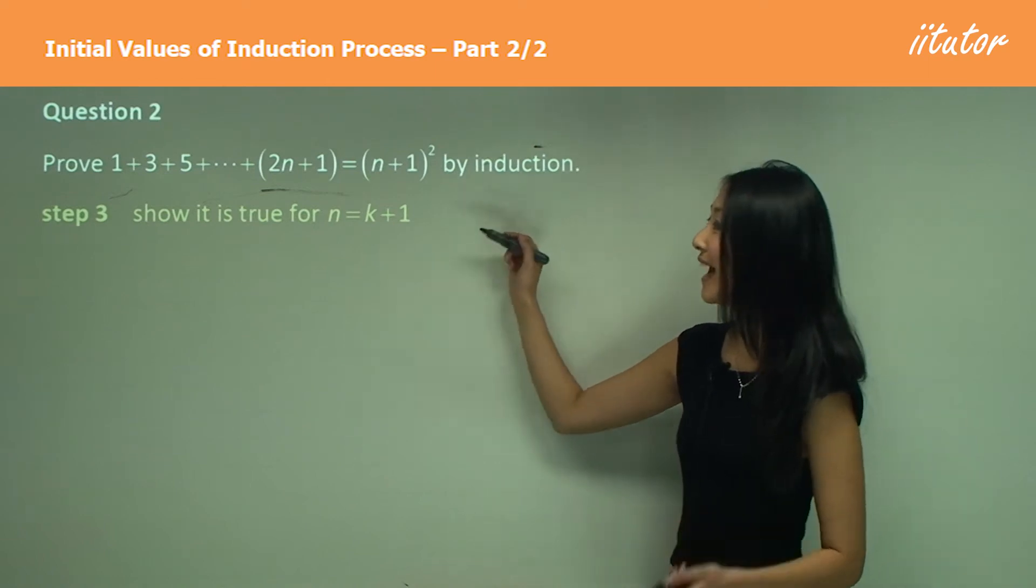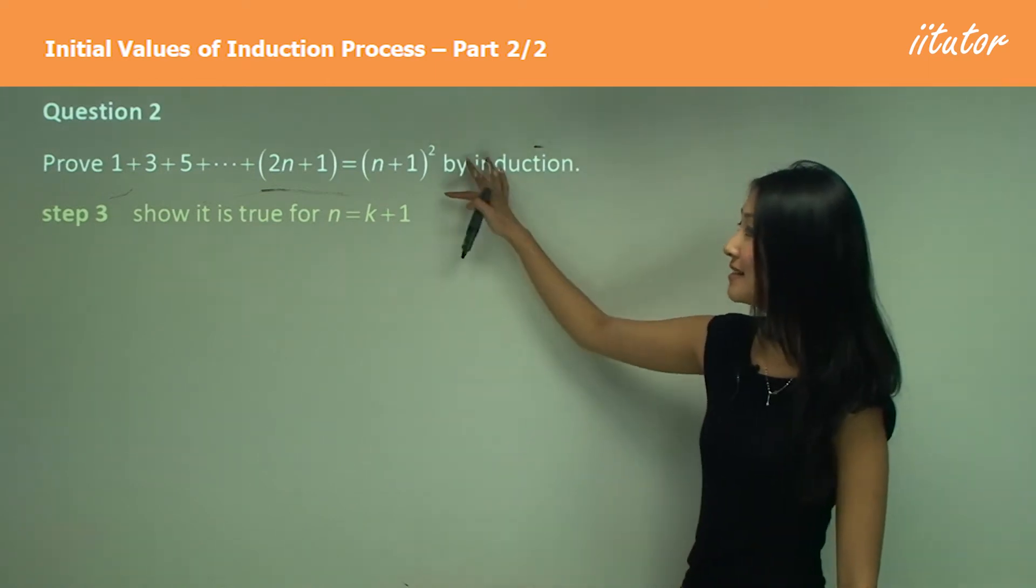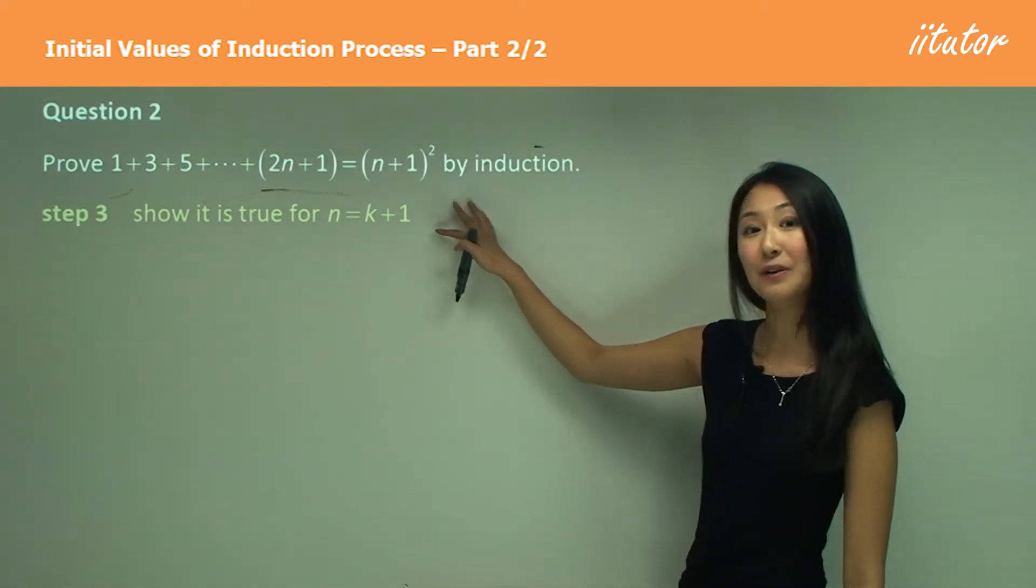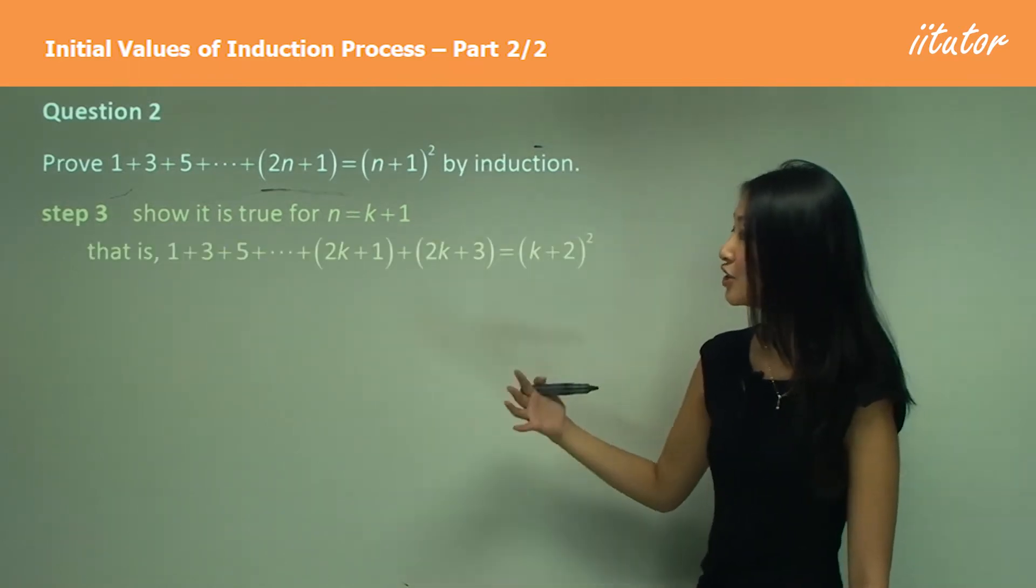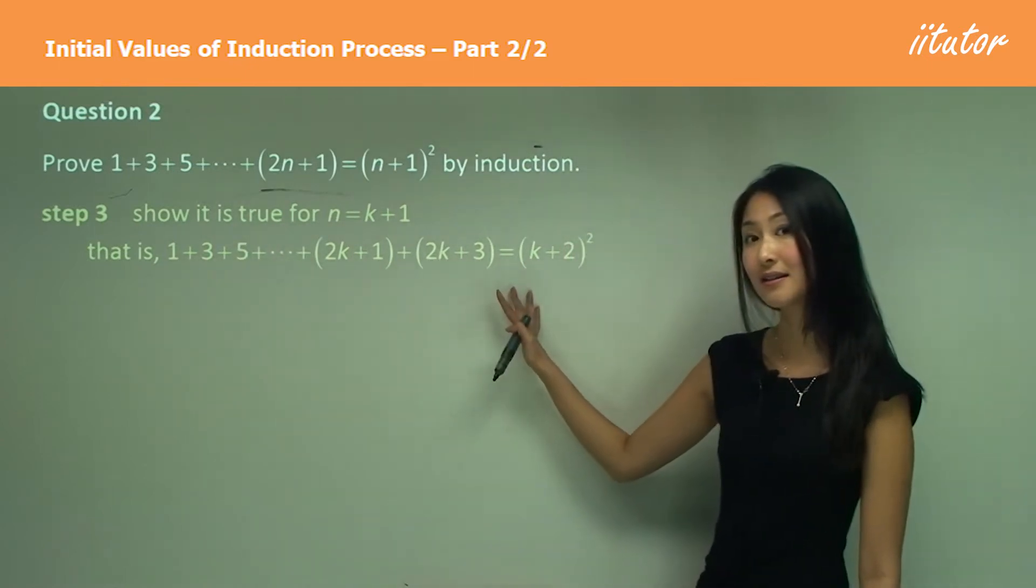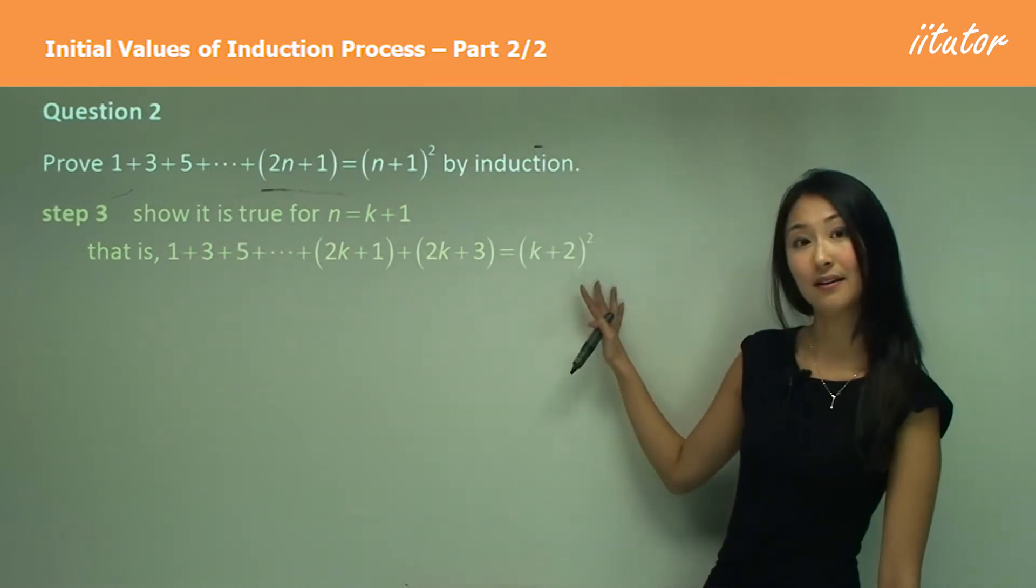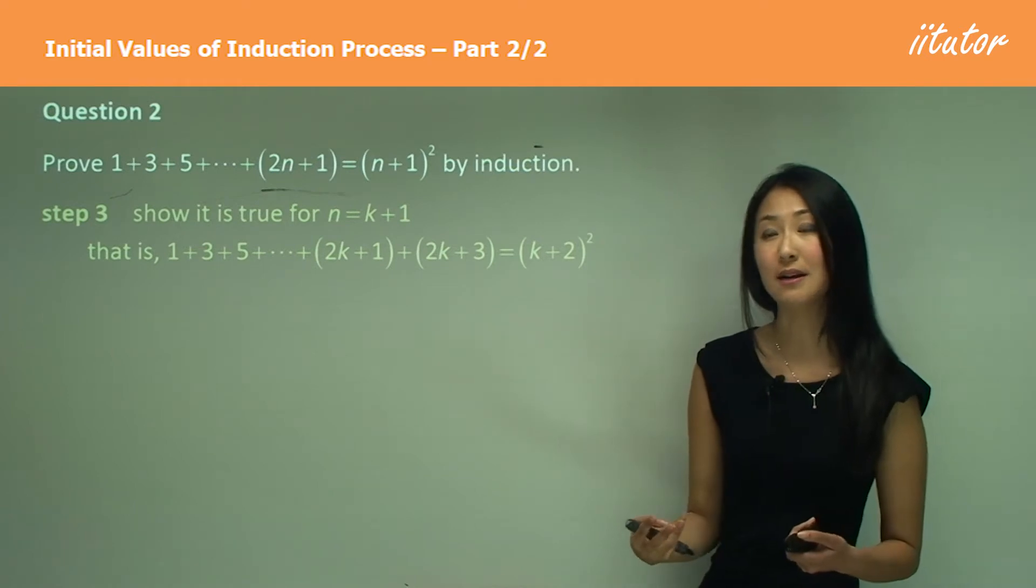Moving on to step three. Now we want to show that this is true for n equals to k plus one. That is showing that this left hand side equals to this side. That's what we want to do in step three.